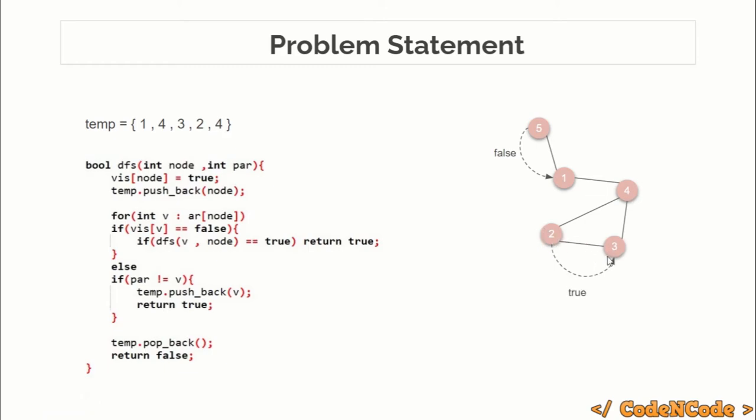So node 2 will return true. Now we are at node 3 and we will continue here. DFS has returned true, so node 3 will also return true. Node 3 will return true to node 4. Again we'll continue here for node 4, this DFS call for node 4 has returned true, so clearly it will also return true. Again we are at node 1, node 1 has received true, so it will return true to the main function.